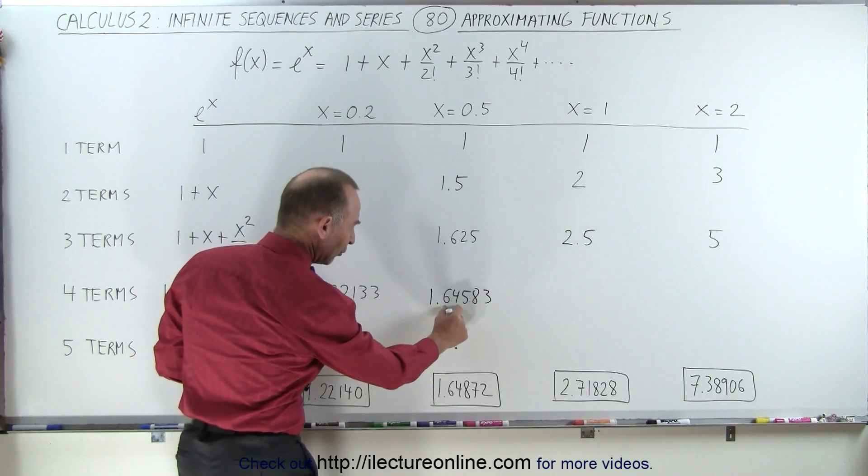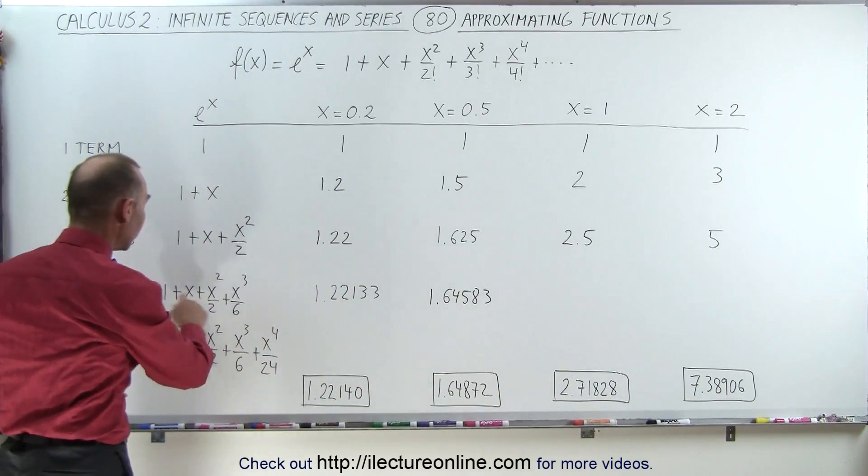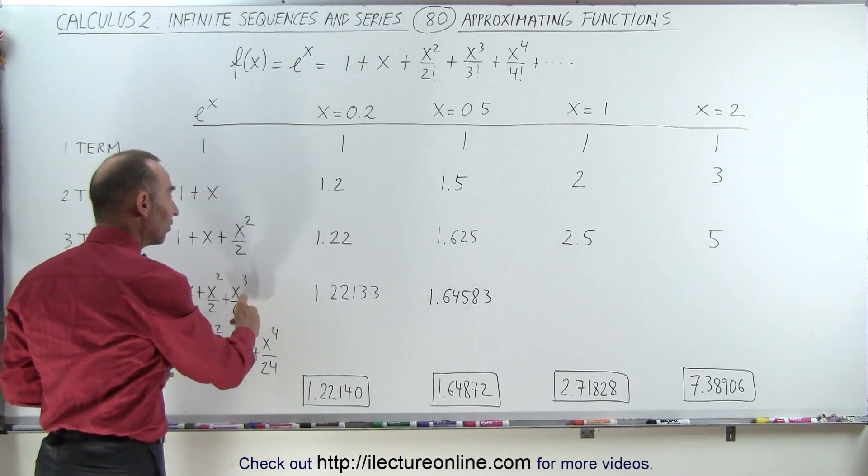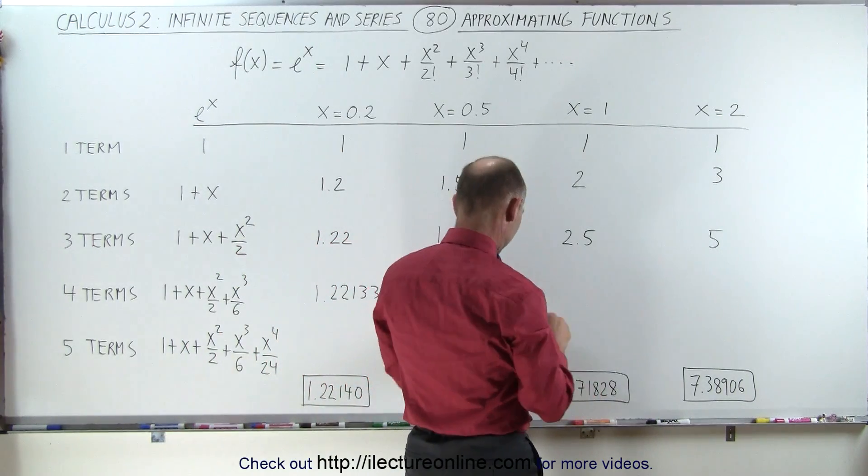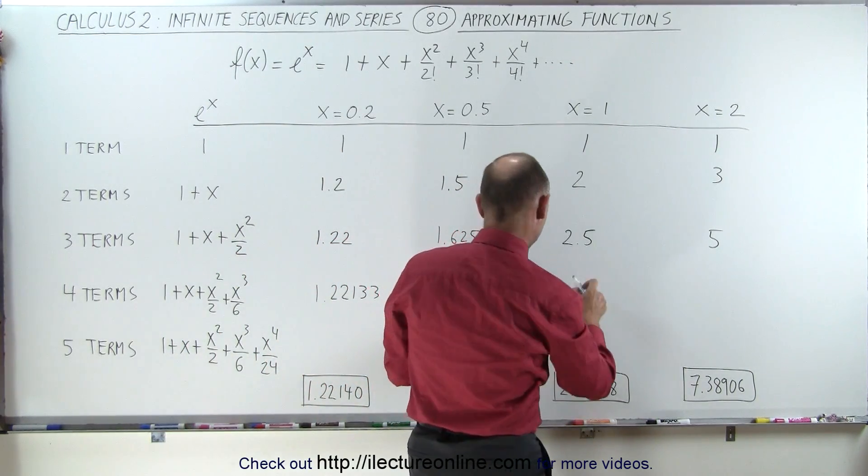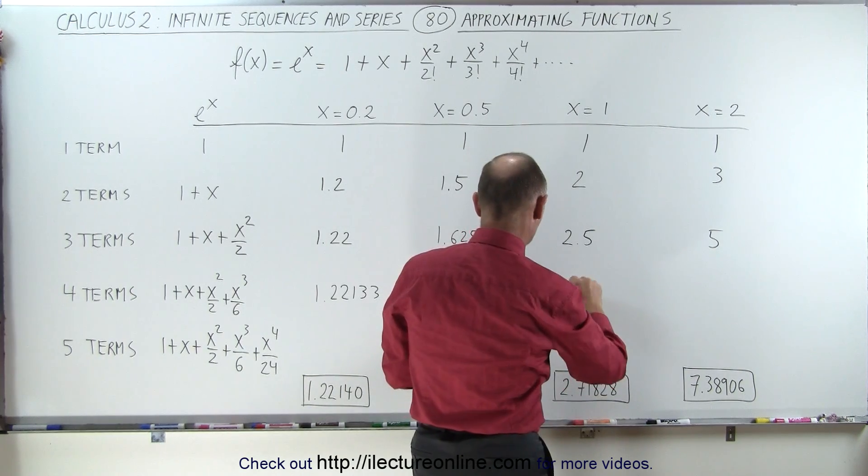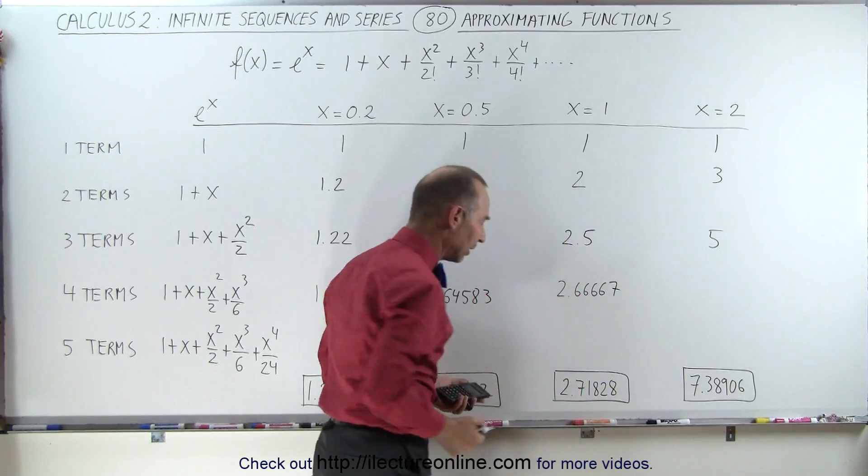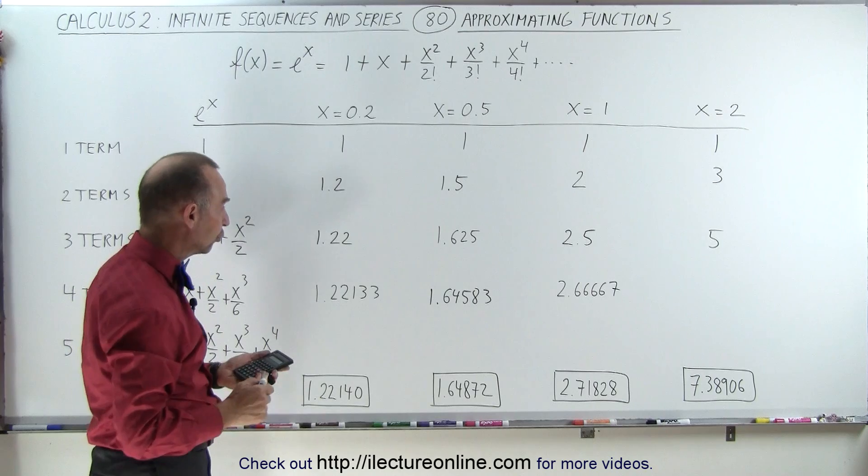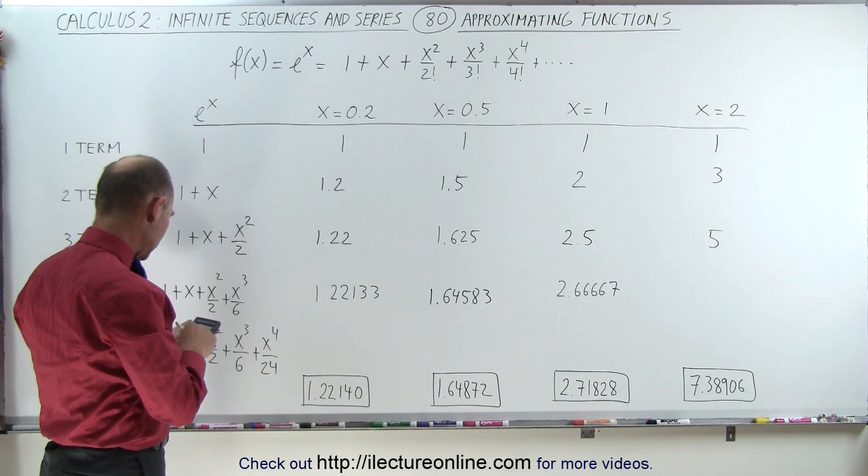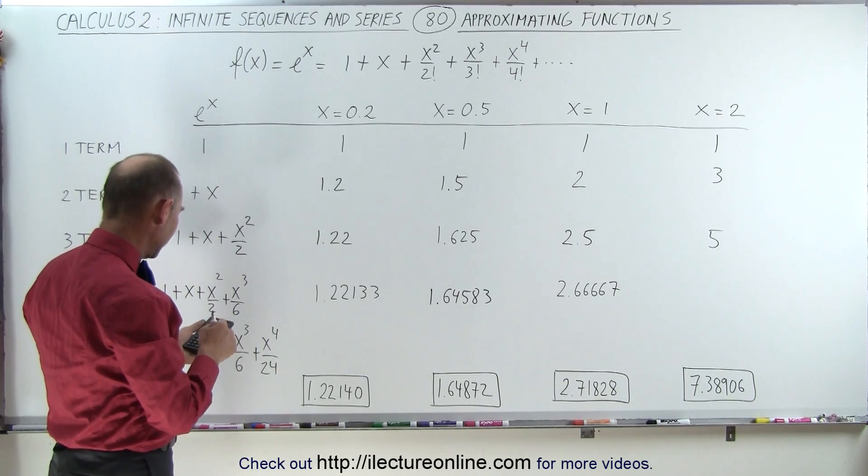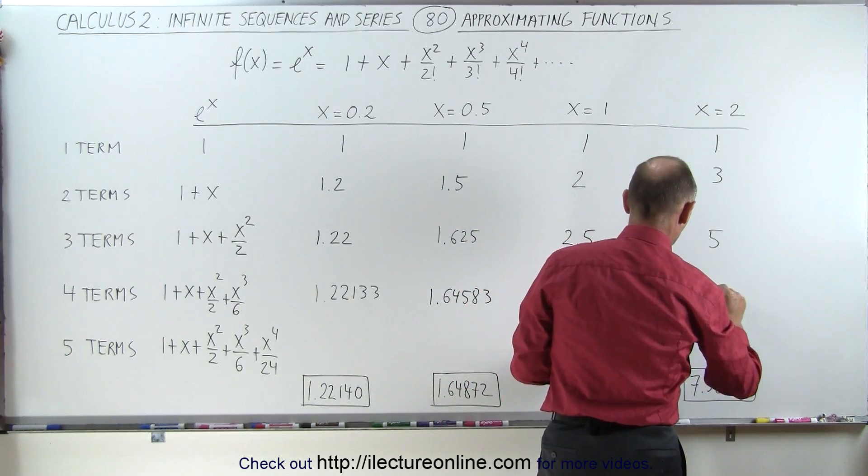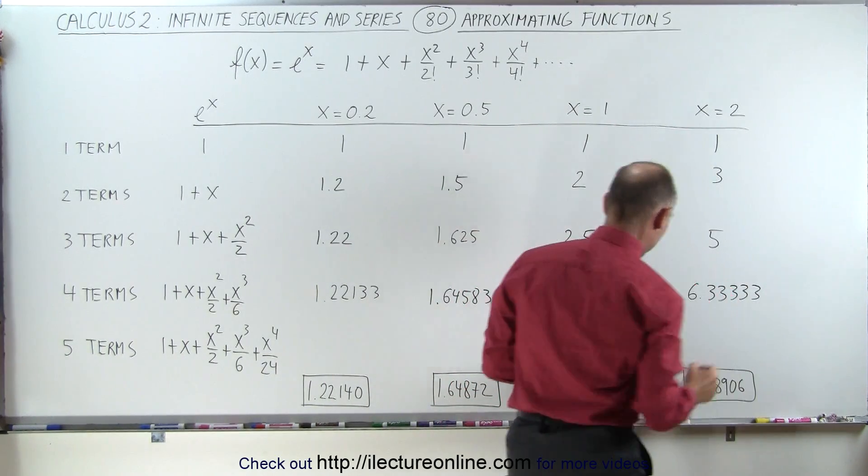And notice we already have the first two decimal places, so we're getting fairly close with only four terms when x equals 0.5. Now when x equals 1, we're going to add another 1 sixth to 2.5. So 1 sixth, 1 divided by 6, plus 2.5. That gives us 2.66667. And we're getting closer to that one as well. And when x equals 2, we add, we have 2 cubed, that's 8, divided by 6, and plus 5. And we get 6.33333.